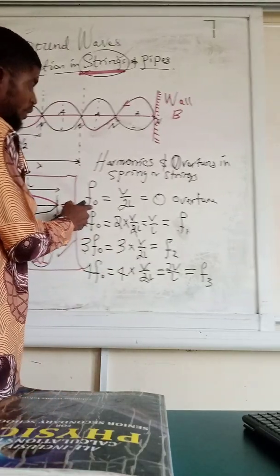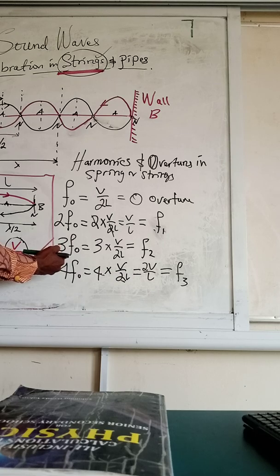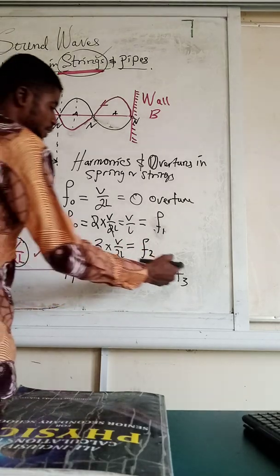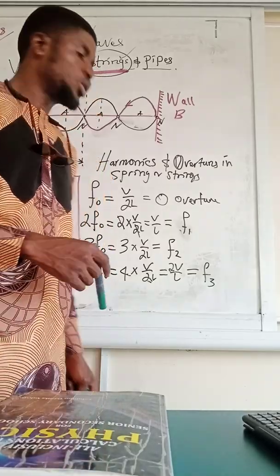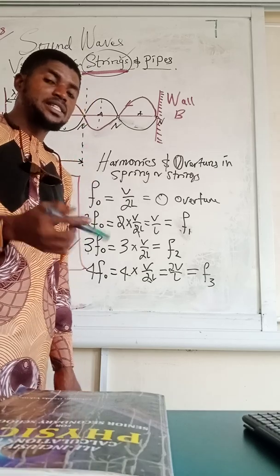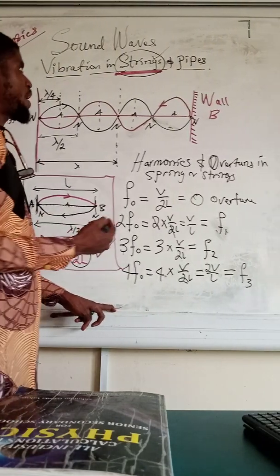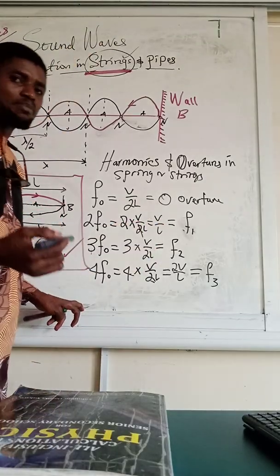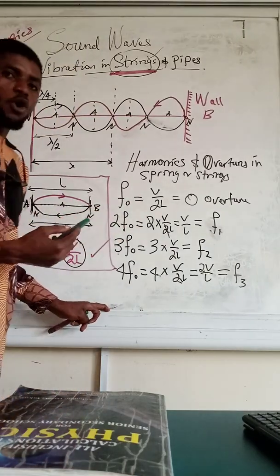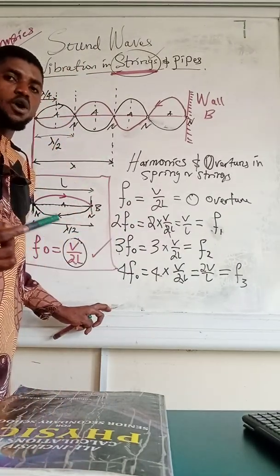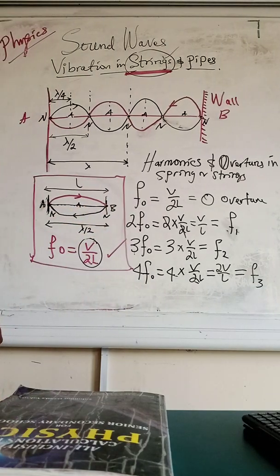In summary: first harmonic equals zero overtone, second harmonic equals first overtone, third harmonic equals second overtone, fourth harmonic equals third overtone. So if examiners ask you to calculate the third overtone in a string instrument, they are simply asking you to calculate the fourth harmonic. Now we are going to look at vibration in pipes, and everything we have done here is the same for open pipes.